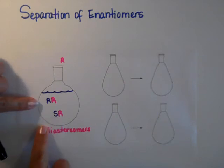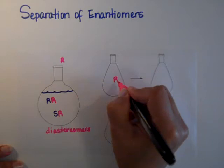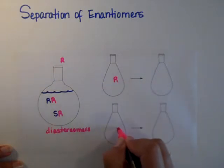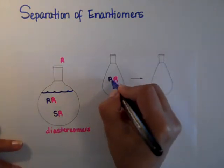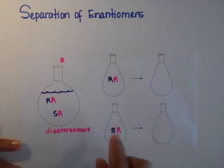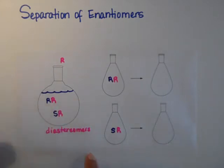Diastereomers are easy to separate, so you get to lab and you're going to separate them. So I have the RR and the SR, and they're in separate flasks already. We did an experiment to separate them.